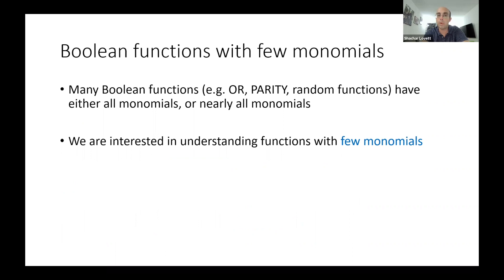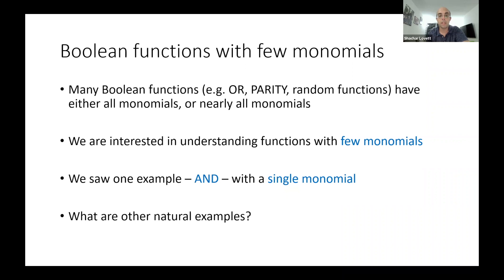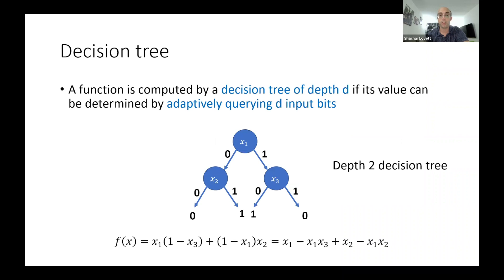If you do a simple check, many boolean functions we usually study — like parity, majority bits, or random functions — look complicated. We really expect only very simple functions to be sparse in this model where we count the number of monomials. We saw one example — the AND function — and we can ask: what are other natural examples of boolean functions that have few monomials?